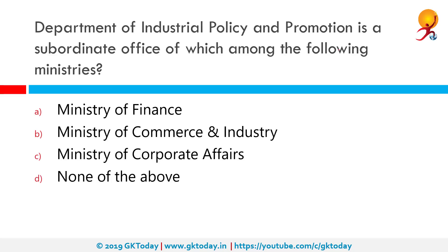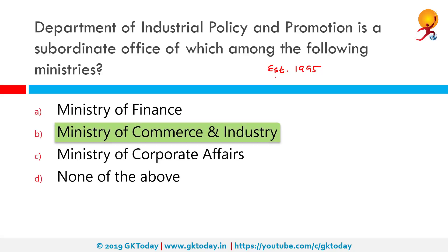The Department of Industrial Policy and Promotion (DIPP) is a subordinate office of which of the following ministries? DIPP was first established in 1995 and then reorganized in 2000 and merged with the Department of Industrial Development. The department falls under the Ministry of Commerce and Industry and looks at overall industrial policies, whereas separate departments specialize in specific areas allocated to them.